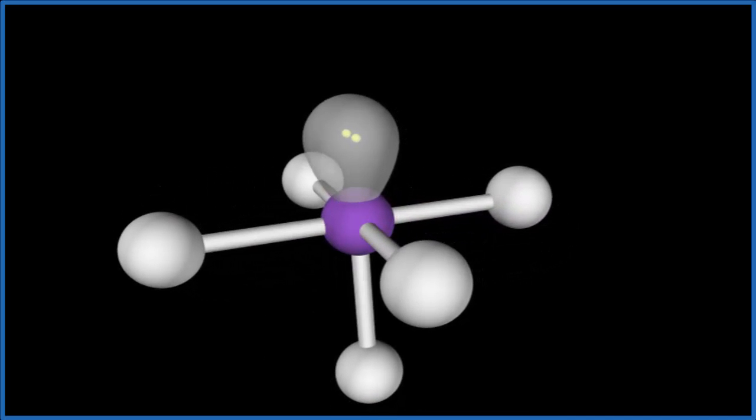If we look at the electron geometry, then we take into account these lone pairs here, and that gives us an octahedral molecular geometry. Let's go back to our Lewis structure.